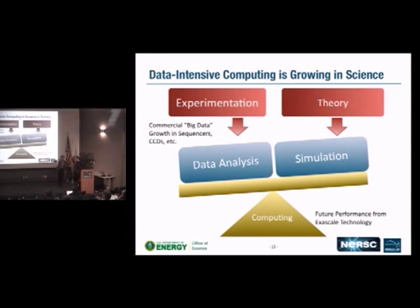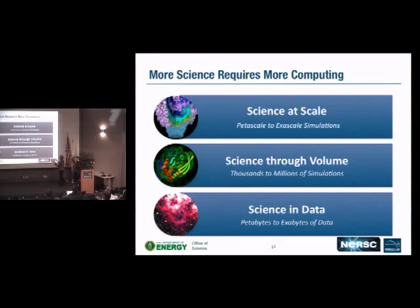Regardless of the balance between simulation and data analysis, both rely on having faster computers — which goes back to the iPhone and Google exercise. You really need faster, more plentiful computation to solve these problems. Let me talk about science trends. I like to divide the science we do into large-scale petascale-to-exascale simulations; 'volume science,' which is running massive numbers of ensemble simulations for uncertainty quantification or biological/materials screening; and data analysis of huge datasets.